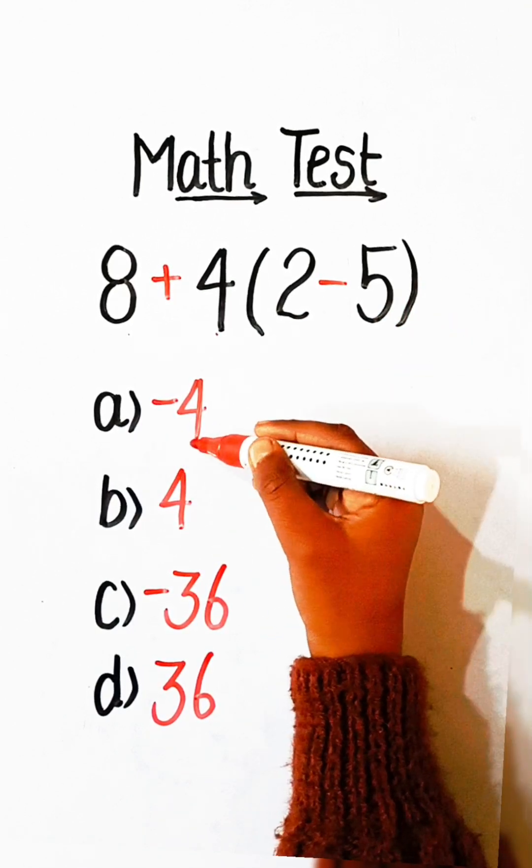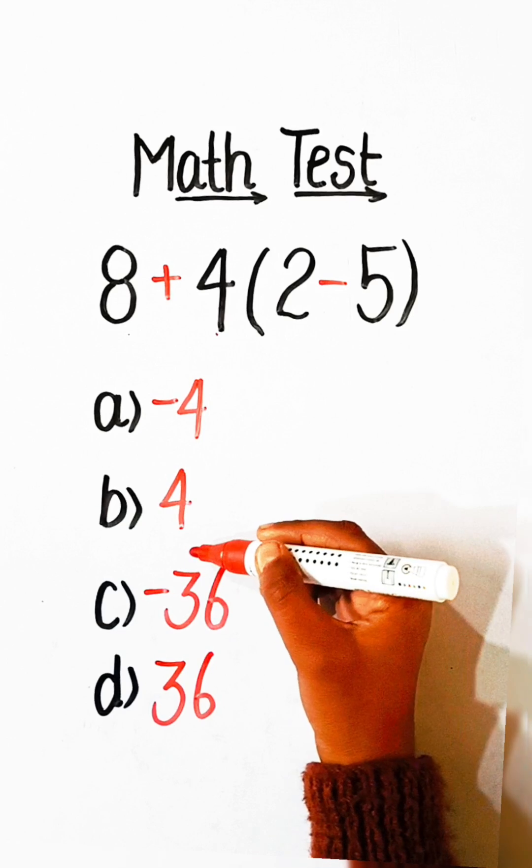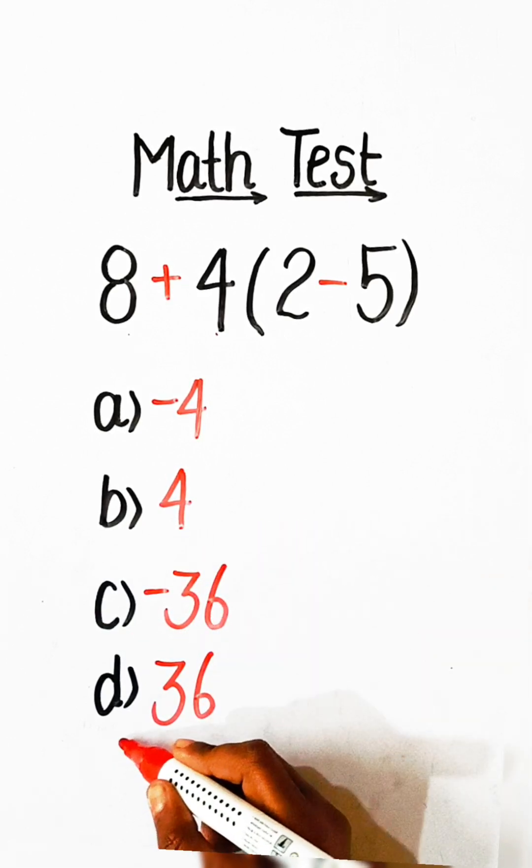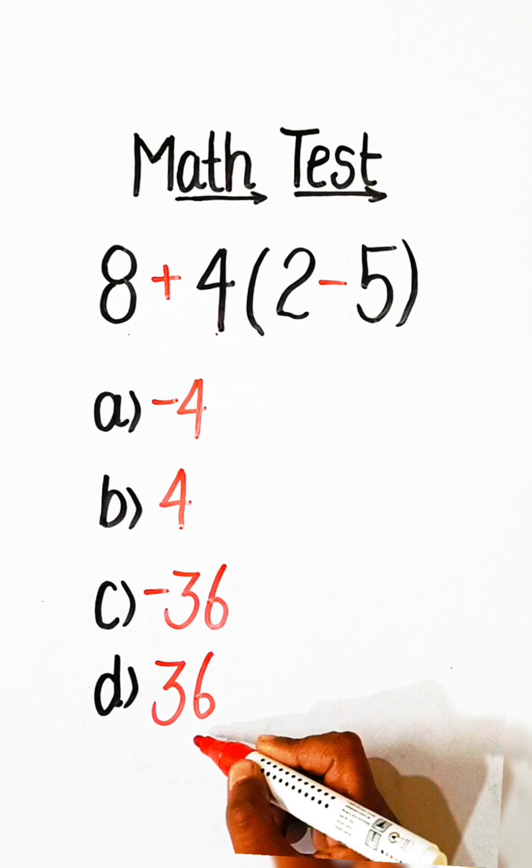Option A, minus 4. Option B, 4. Option C, minus 36. Option D, 36.